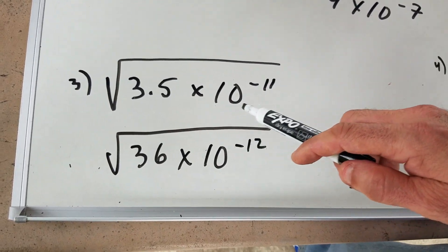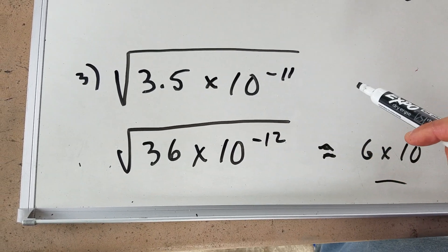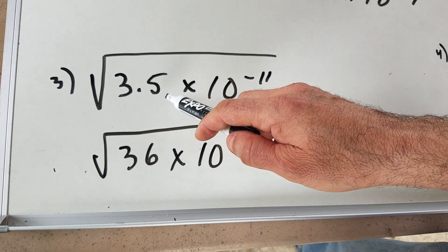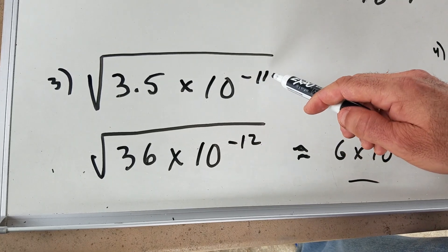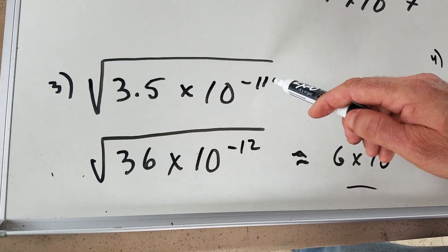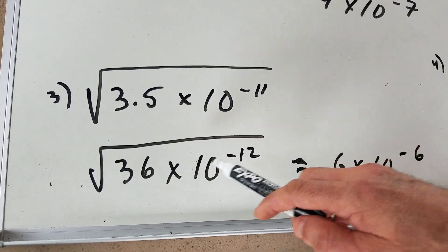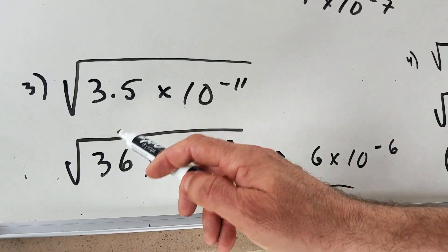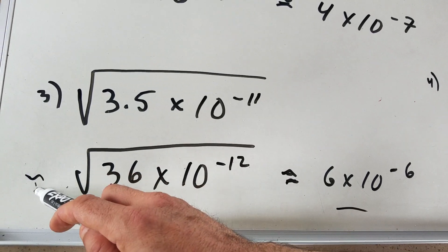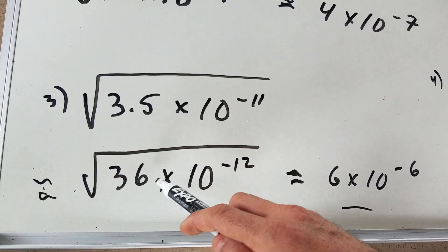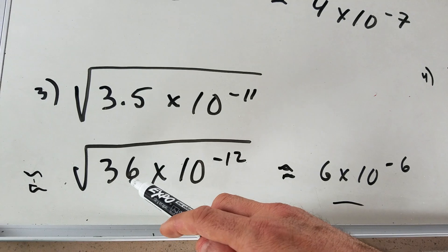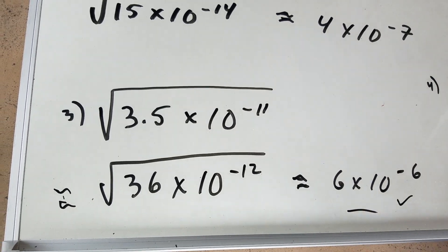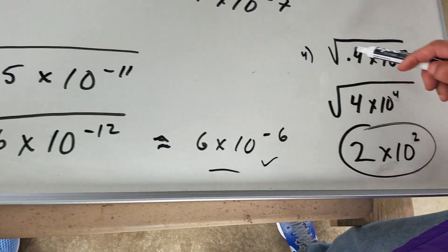If I did the square root of 3.5 times 10 to the minus 11th — again, you have an odd number. I'm going to move the coefficient up by 10, and move the exponent down by 10. Down from negative 11 is negative 12. 3.5 moved up by 10 becomes 35, which is around 36. So approximately the square root of 36 times 10 to the minus 12. Square root of 36 is 6, and half of minus 12 is minus 6. So you get 6 times 10 to the minus 6. And boom — let's do one more. I'm following you.